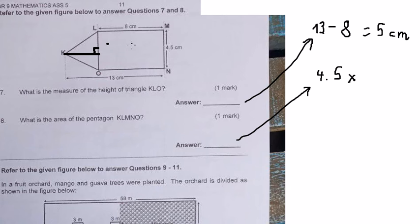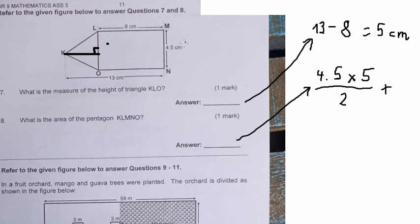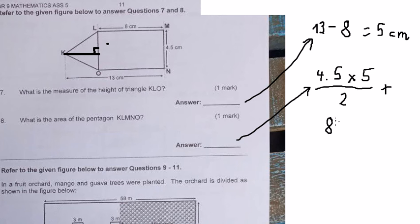We multiply 4.5 with 5, which is the height of the triangle, and divide by 2. Then we add the area of the rectangle, where we multiply the length and the width together. So we get about 47.25 square centimeters.